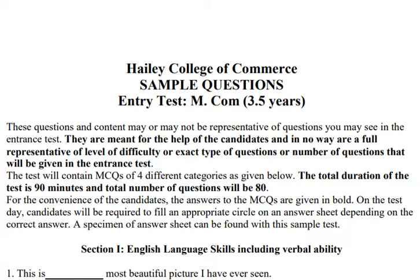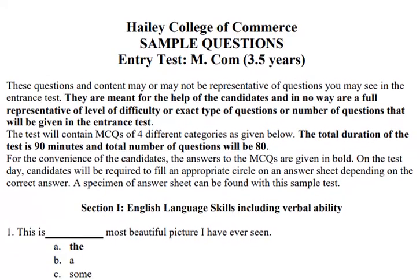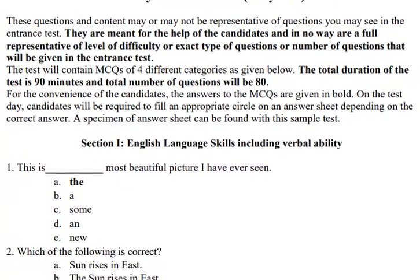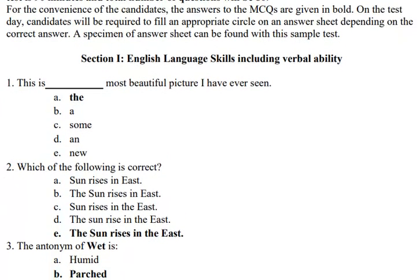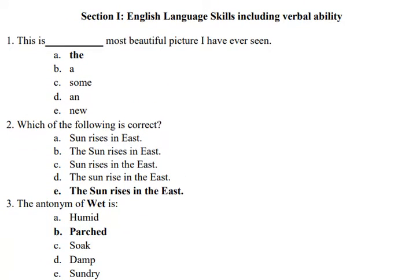Read the questions and you will be able to identify the different sections. Section 1: English language skills — there may be sentence completion questions, sentence correction questions, synonyms and antonyms.